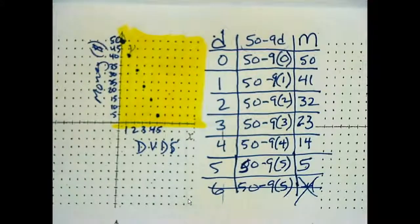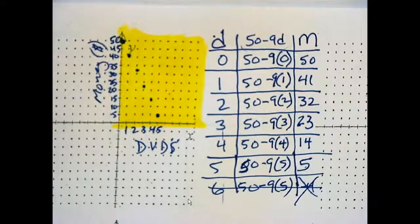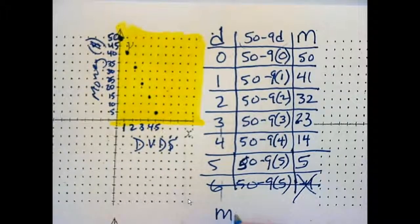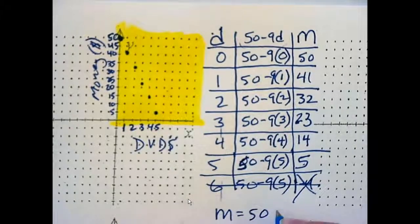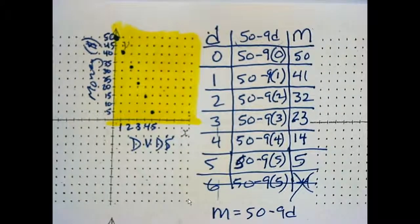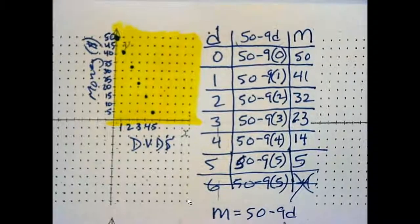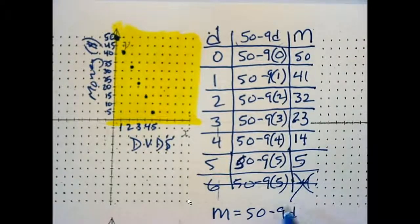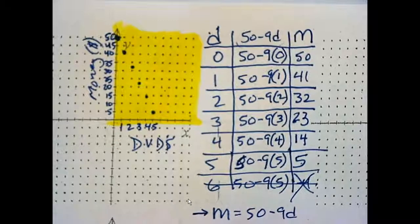All right. Is that linear? Yes. Yeah, it is linear, right? How could we have told from this equation, m equals 50 minus 9d, that it was going to be linear? Jason? It goes down by the same amount. What power is d to? 1. Yeah, d is to the first power.